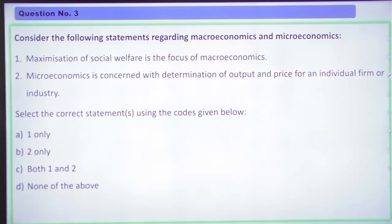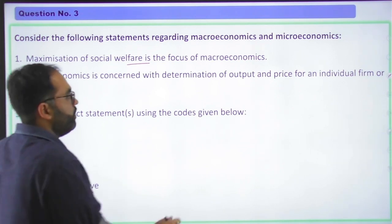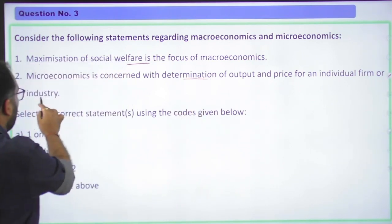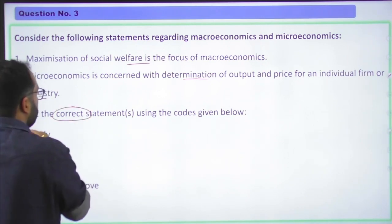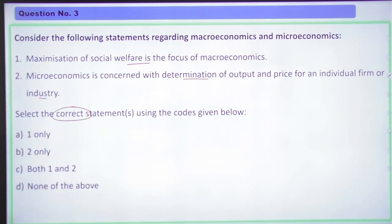Moving to the next question. Consider the following statements regarding macro and microeconomics. First, maximization of social welfare is the focus of macro. Second, micro is concerned with determination of output and price of an individual firm or industry. So you have to select which statement is correct: one only, two only, both one and two, or none of the above.